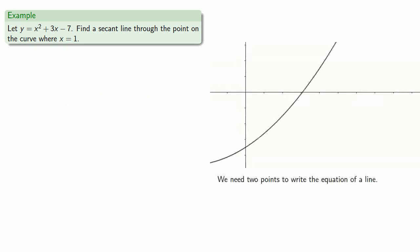We need two points to write the equation of a line, and x = 1 is a half point. We need the y value. Fortunately, we have a handy equation that tells us what the y value is. And so we find... And let's go ahead and write that down on our graph.